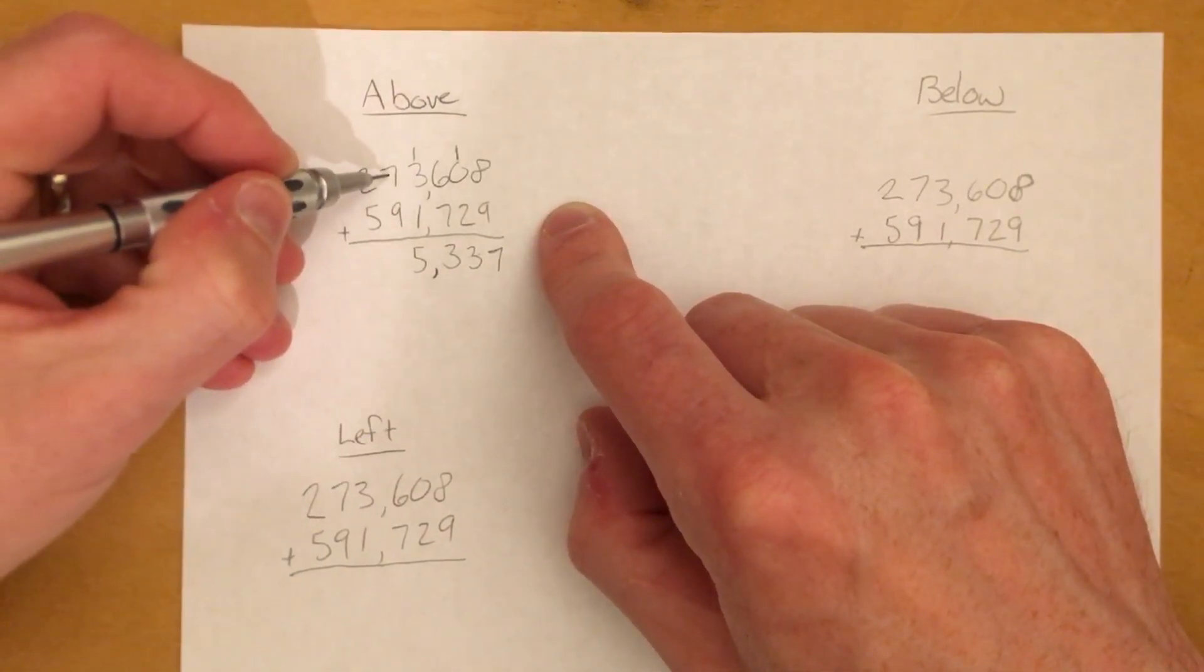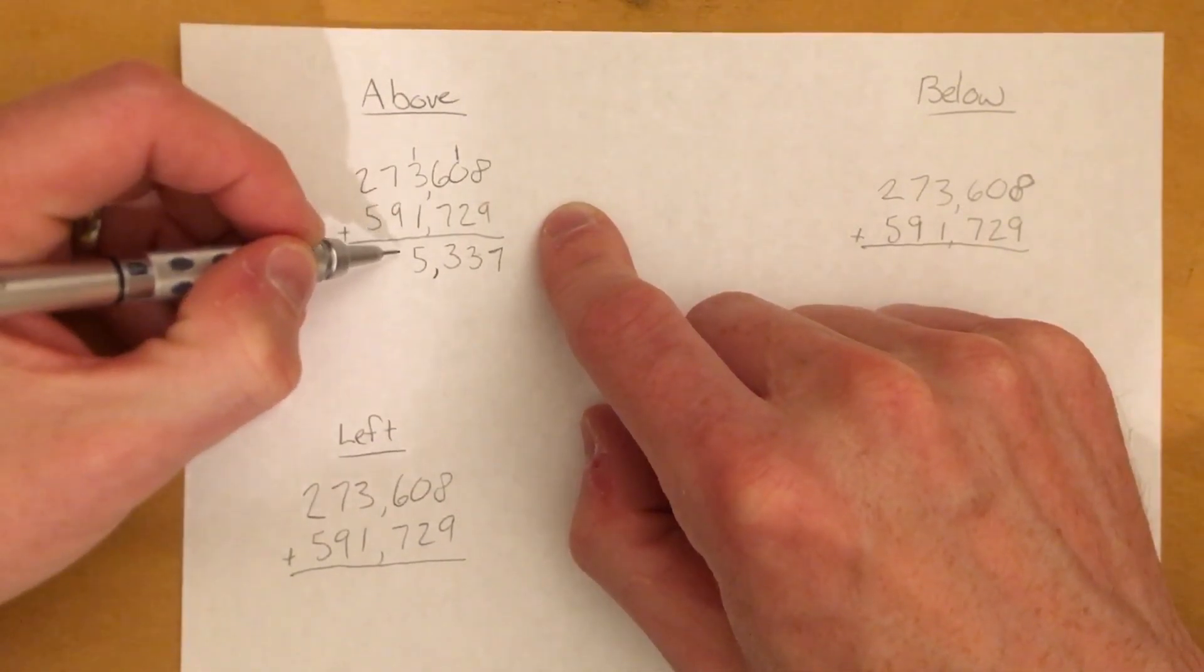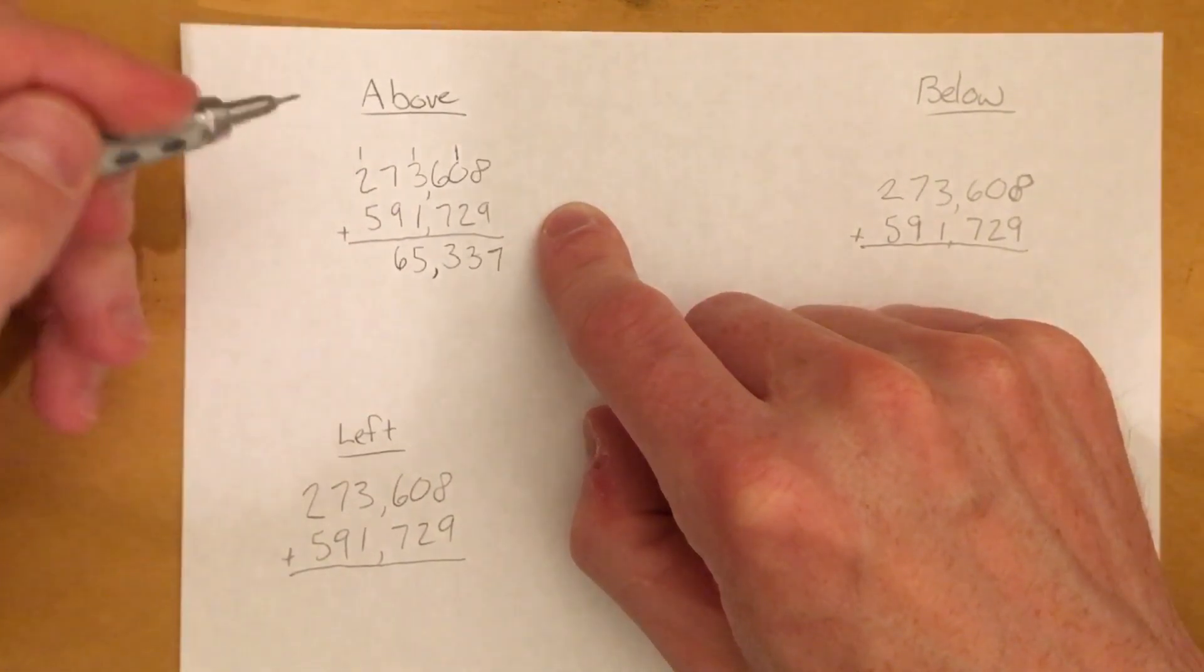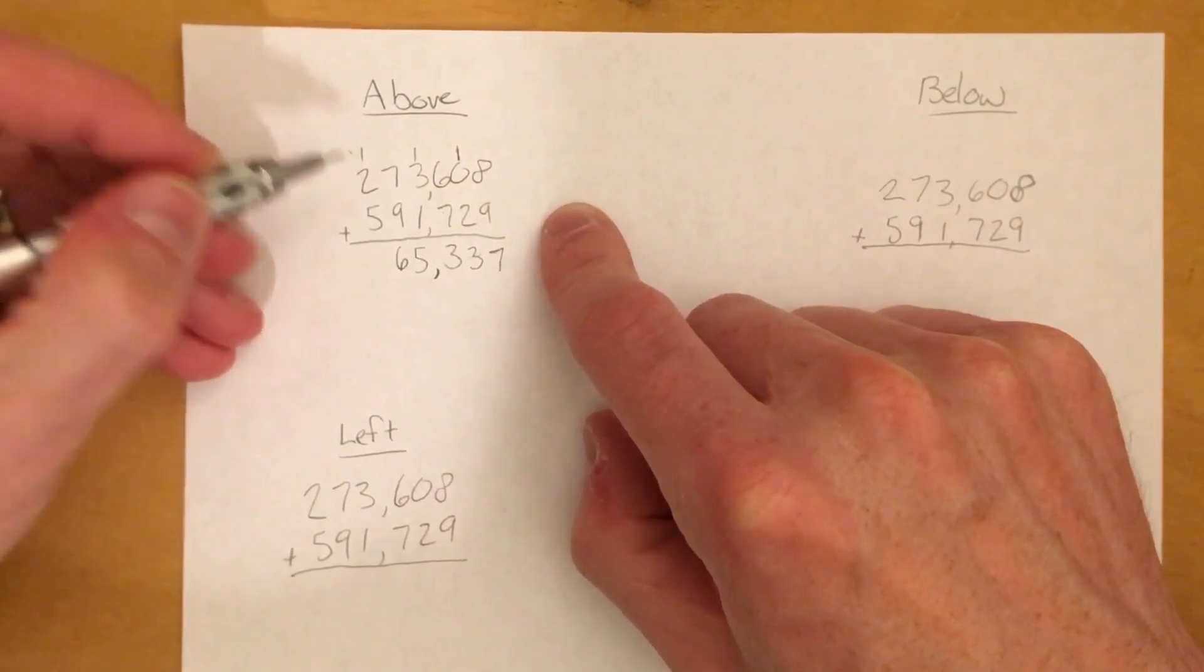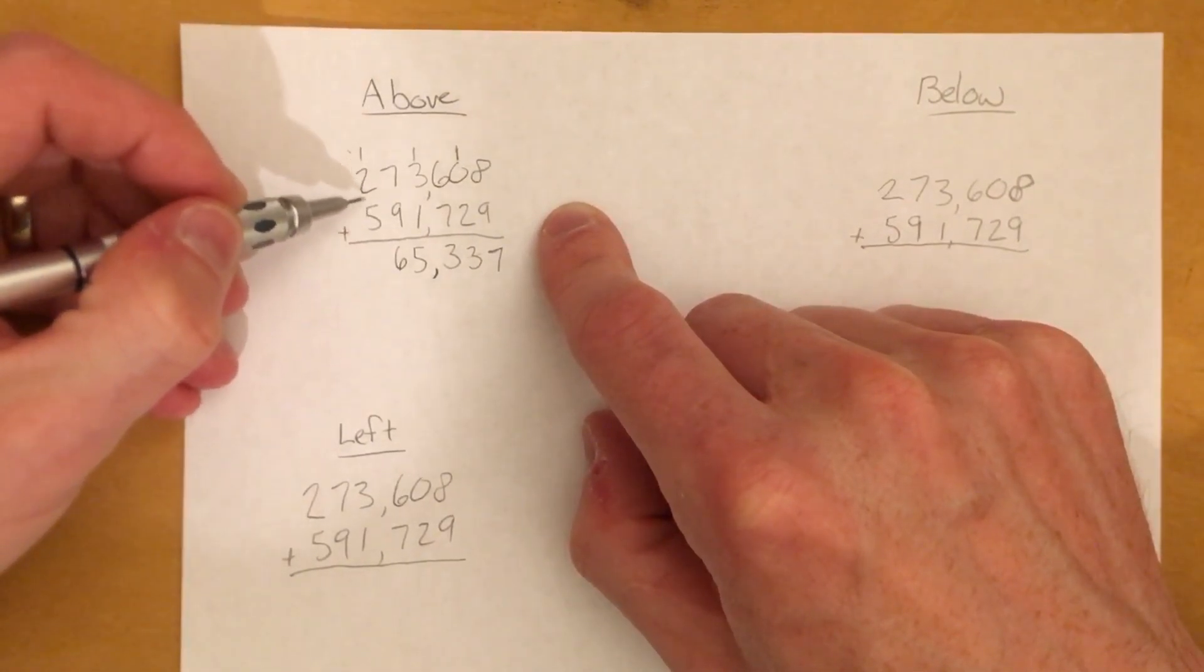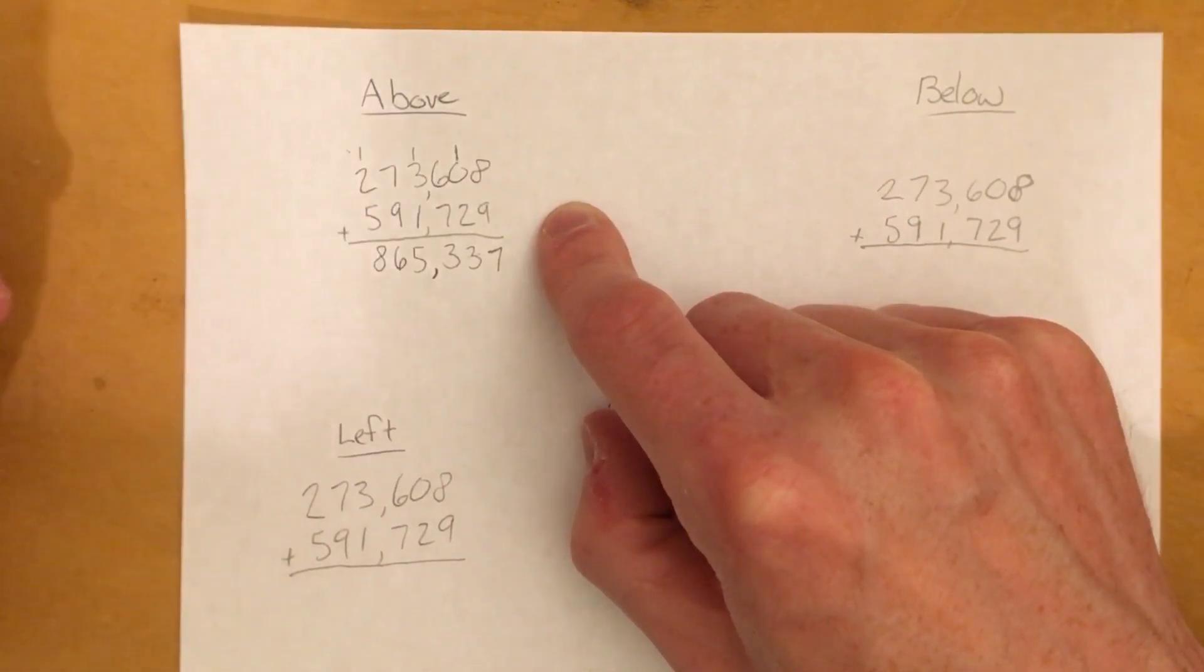Then I have my 7 plus 9 which equals 16. I put my 1 up here. Then my 1 plus my 2 is 3, 3 plus 5 equals 8.